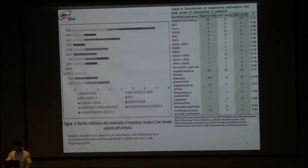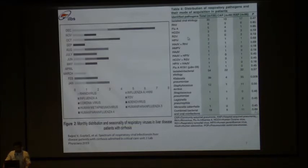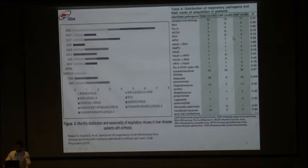Regarding distribution of respiratory pathogens and their mode of acquisition: out of 135 patients, isolated viral etiology was found in 30, of whom 13 were community-acquired and 17 were hospital-acquired. The most common was rhinovirus, followed by influenza, coronavirus, respiratory syncytial virus, and others. There was concomitant infection with bacterial pathogens. There is no significant difference between community-acquired and hospital-acquired pneumonia in terms of frequency, except Klebsiella pneumoniae and Staphylococcus aureus, which are more prevalent in hospital-acquired pneumonias.